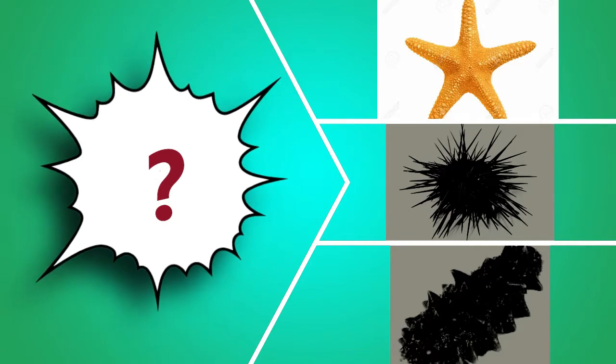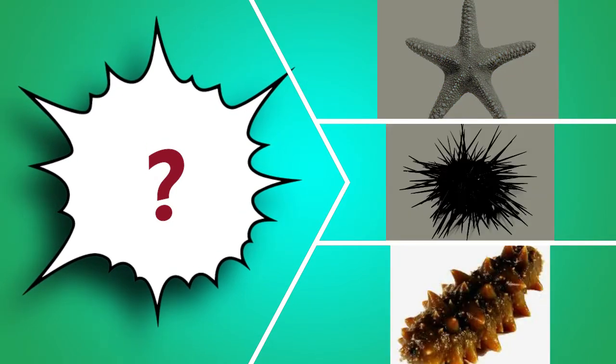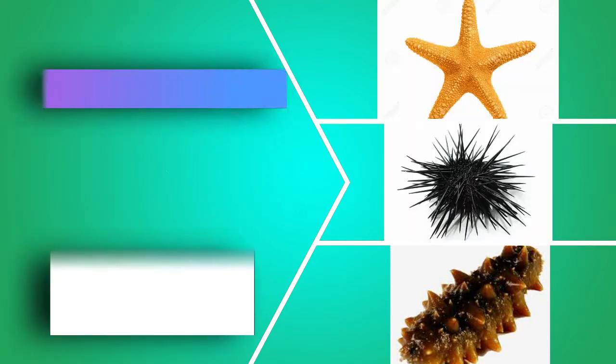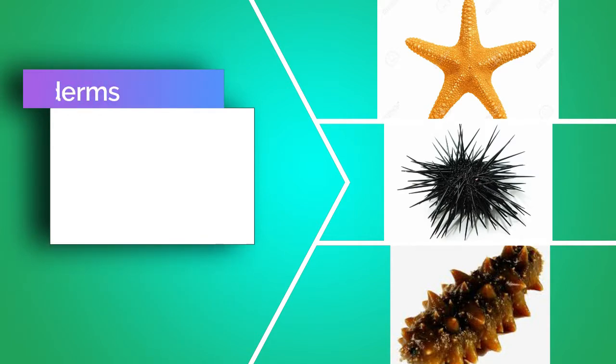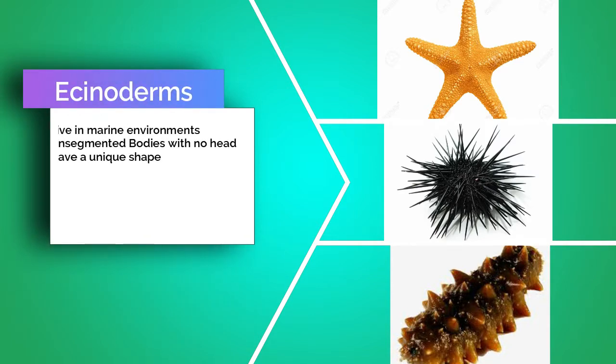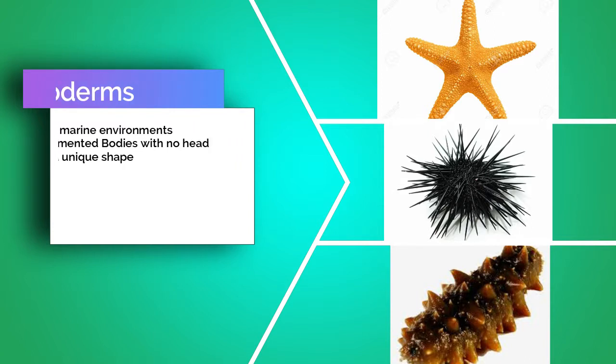Here we have a sea star, a sea urchin, and a sea cucumber. Some characteristics common among these: they always live in a marine environment — always water. They have an unsegmented body and they don't have a head. The body has a really unique kind of shape — it can be star-like, sometimes elongated, or sometimes spherical, more like a ball.